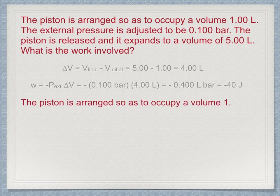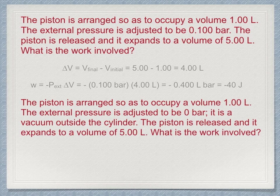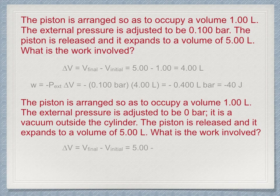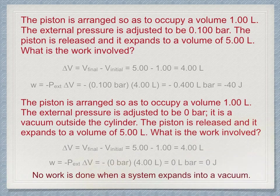Another problem. Again, the piston is arranged to occupy a volume of 1 liter. External pressure is adjusted to be 0 bar, that is, it's a vacuum outside the piston. When the piston is released, it is again allowed to expand to 5 liters. The latch stops it at the same position as before. What is the work involved? Delta V is again 4 liters, as the motion is the same as above. The work, however, is minus P external delta V, minus 0 times 4 liters, or 0 liter bars, 0 joules. No work is done when a system expands into a vacuum.